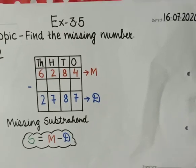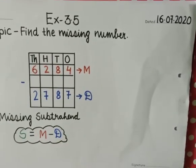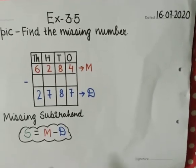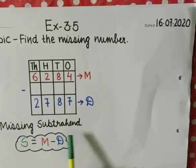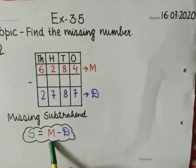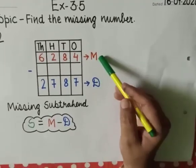So students, my next topic is to find the missing subtrahend. Same as we made the formula for the missing minuend, we have the formula for the missing subtrahend as well. For this, we will do M minus D, means we will subtract difference from the minuend.